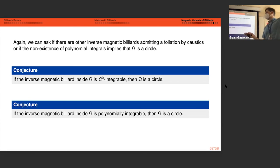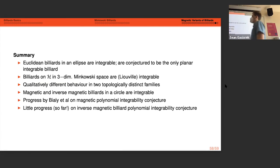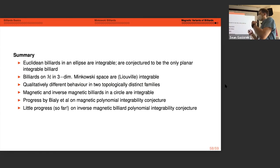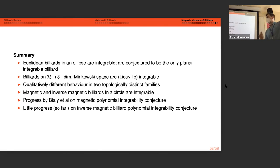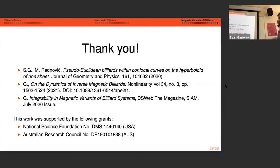To summarize: Euclidean billiards in ellipses are integrable. In three-dimensional Minkowski space we have Liouville integrability for two topologically distinct billiard tables — the collared and transverse H-ellipses — with slightly different dynamics. Magnetic and inverse magnetic billiard trajectories are integrable in the circle, and we can talk about polynomial integrability for both magnetic and inverse magnetic billiards, with results proven in two of three curvature regimes for the magnetic case.